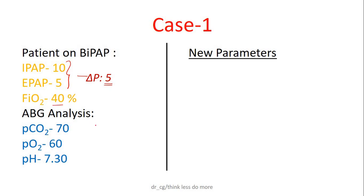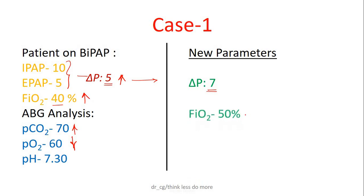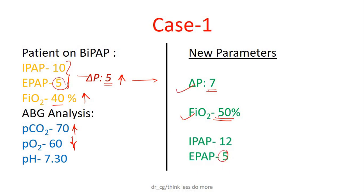Here FiO2 is 40%, so it is on the lower side, meaning we can increase it if required. Now first see PCO2 level — here it is 70, meaning it is high, so we have to decrease this level by increasing the pressure difference. So our new pressure difference should be 7. Now see PO2 level — here it is 60, meaning it is on the lower side. So we can increase our FiO2 to 50% from the current 40%. As we are increasing FiO2, there is no change in EPAP. So new required pressure difference is 7, meaning we have to increase IPAP to 12 to make the difference of 7. That's all — we have solved case number 1.